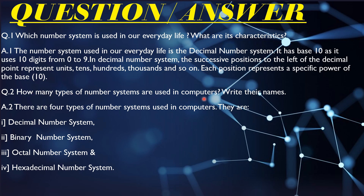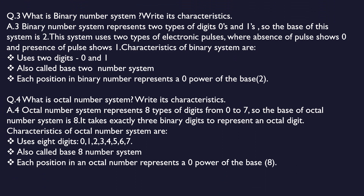The next question is: how many types of number systems are used in computers? Write their names. There are four types of number systems used in computers: decimal number system, binary number system, octal number system, and hexadecimal number system.